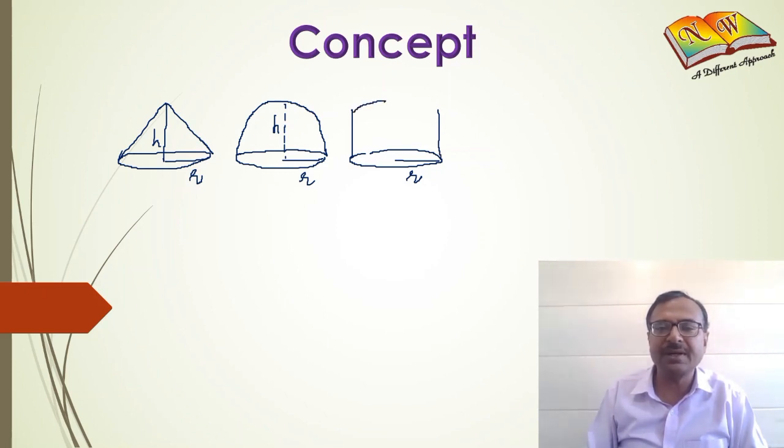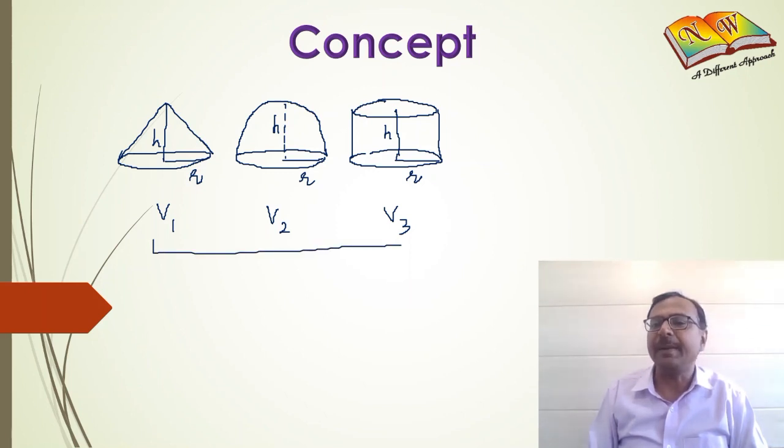So again, the height has to be the same as before. The volume V₁ of this cone, the volume V₂ of this hemisphere, and volume V₃ of this cylinder, having the same radius and same height, can be related in some way. And that is the relation we are going to find out using this amazing activity.